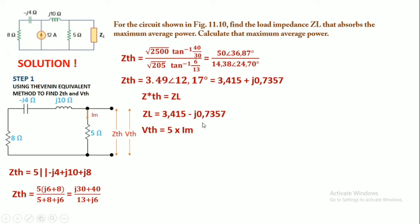To find Im we can use the current divider: 12 multiplied with -j4 + 8 divided by j10 + 5 + 8 - j4.